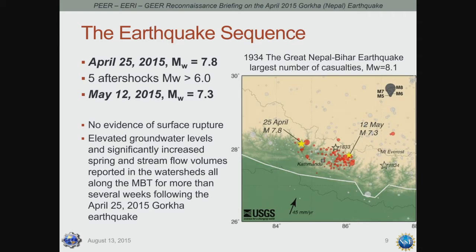An important element of this event is that there was no evidence of surface rupture. A more detailed evaluation has shown that this level of magnitude is not always expected to produce any surface manifestation — larger magnitude earthquakes do result in surface rupture. What was noted, however, were elevated groundwater levels and significantly increased spring and stream flow volumes in the watersheds along the Main Boundary Thrust for more than several weeks after the April 25 event. The 1934 Great Nepal-Bihar earthquake had a moment magnitude of 8.1, confirming these faults are capable of fairly large earthquakes.